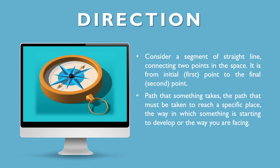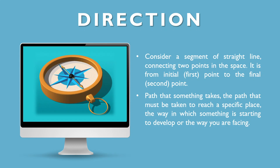In physics, when we talk about direction, we consider a segment of a straight line connecting two points in space. It is from the initial or reverse point to the final or second point. In other terms, it is also defined as the path that something takes, the path that must be taken to reach a specific place, the way in which something is starting to develop, or the way you are facing.